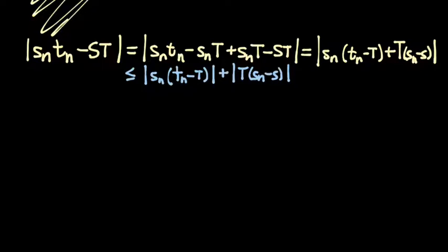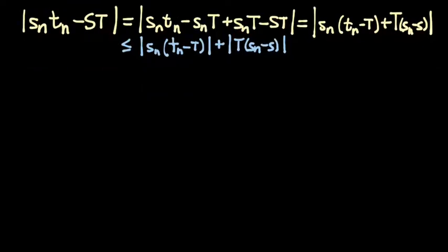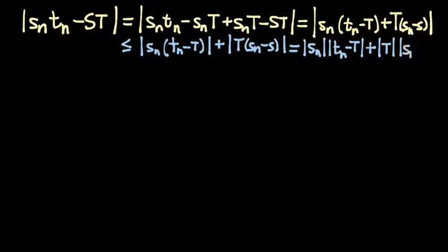Then we can use the norm property. Our last step is to use the product property — the homogeneity property of absolute values — to split this into four different pieces. This equals absolute value of Sn times absolute value of TN minus T, plus absolute value of T times absolute value of Sn minus S. Let me call these four pieces A, B, C, and D respectively.